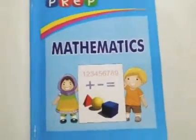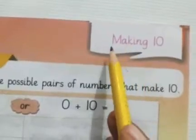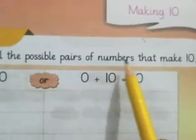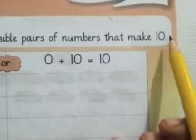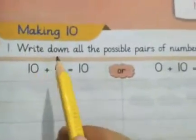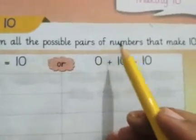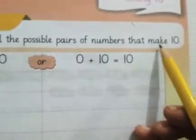This is our maths book. Open your book. Open page 37. First, we have to write date and day. Our topic is Making 10. Write down all the possible pairs of numbers that make 10.